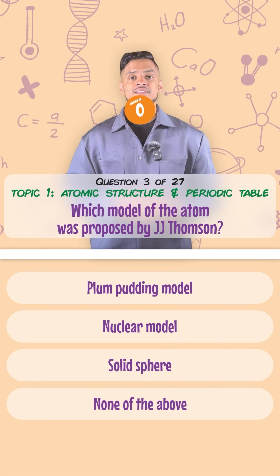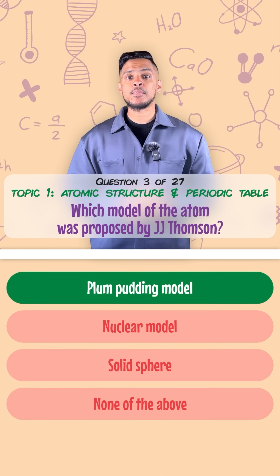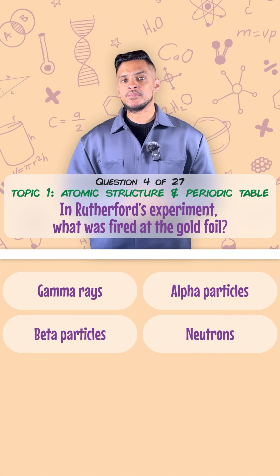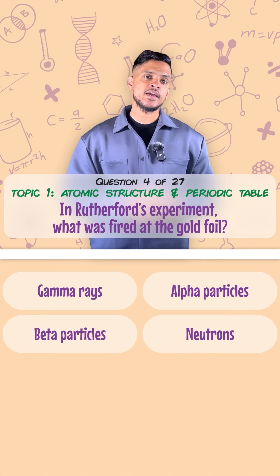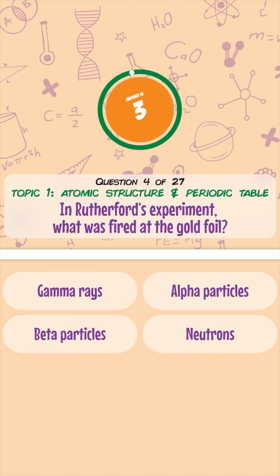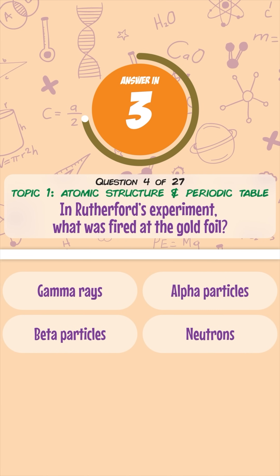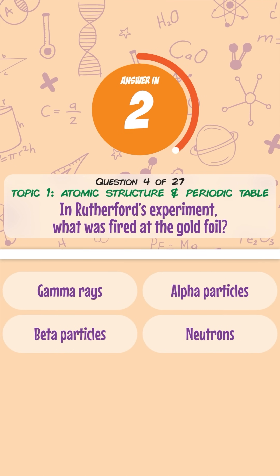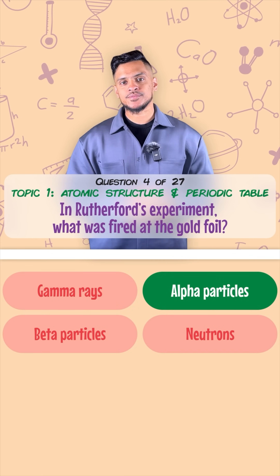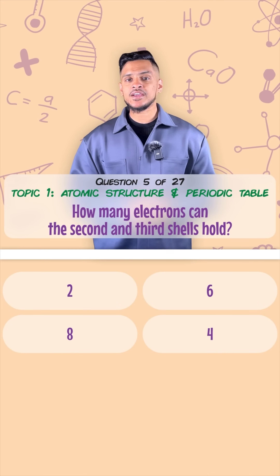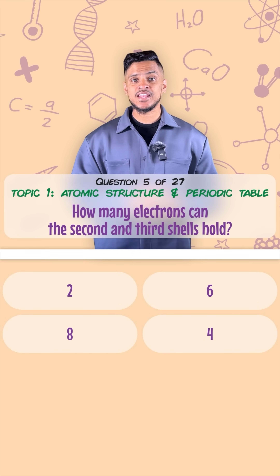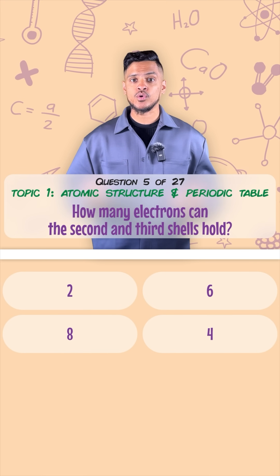The name for that is the plum pudding model. In Rutherford's experiment, what was fired at the gold foil? It was alpha particles.